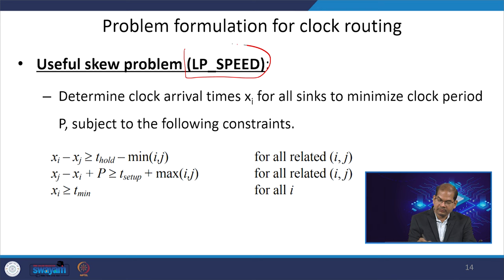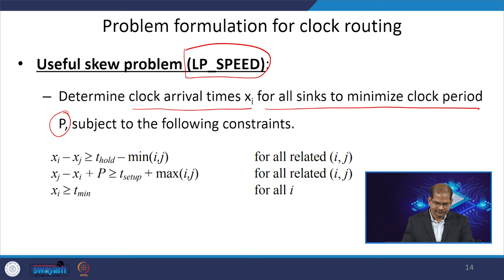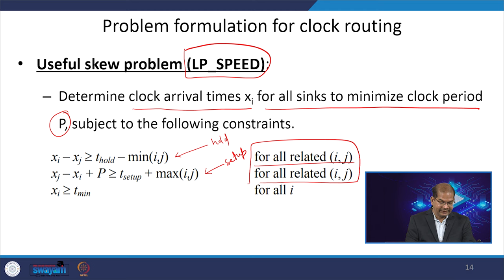Between two flip-flops or latches, the minimum sourcing delay is T_min. We can formulate two problems: LP_speed determines the clock arrival times x_i for all sinks to minimize the clock period p — minimizing the clock period gives higher speed. We have two constraints: one related to hold and one related to setup, for all i,j pairs. Also x_i ≥ T_min for all i. This can be solved using a linear programming solver.